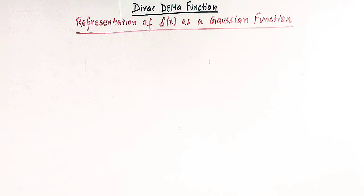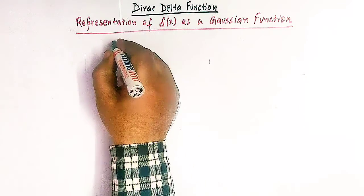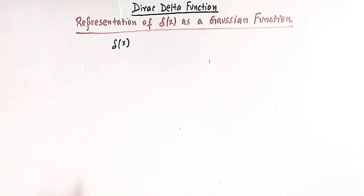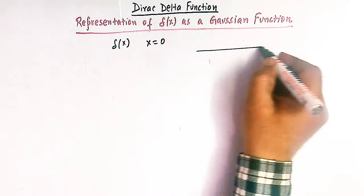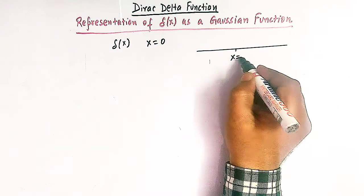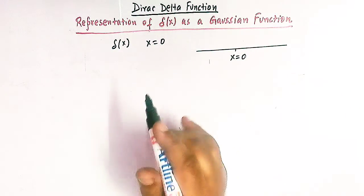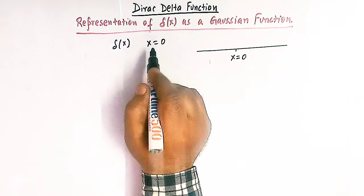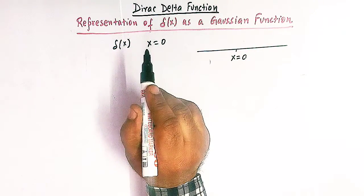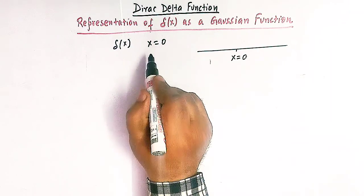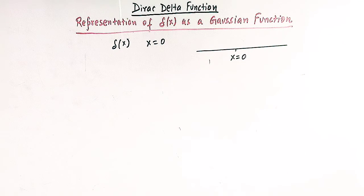We have already discussed a lot about the Dirac delta function in our earlier lectures. Let us first quickly see the definition of the famous Dirac delta function. The one-dimensional Dirac delta function, denoted by delta(x), is defined as a singular function which vanishes everywhere except at x equal to 0. At this point, the delta function is so large that the integral of the function over an interval containing x equal to 0 is equal to 1.